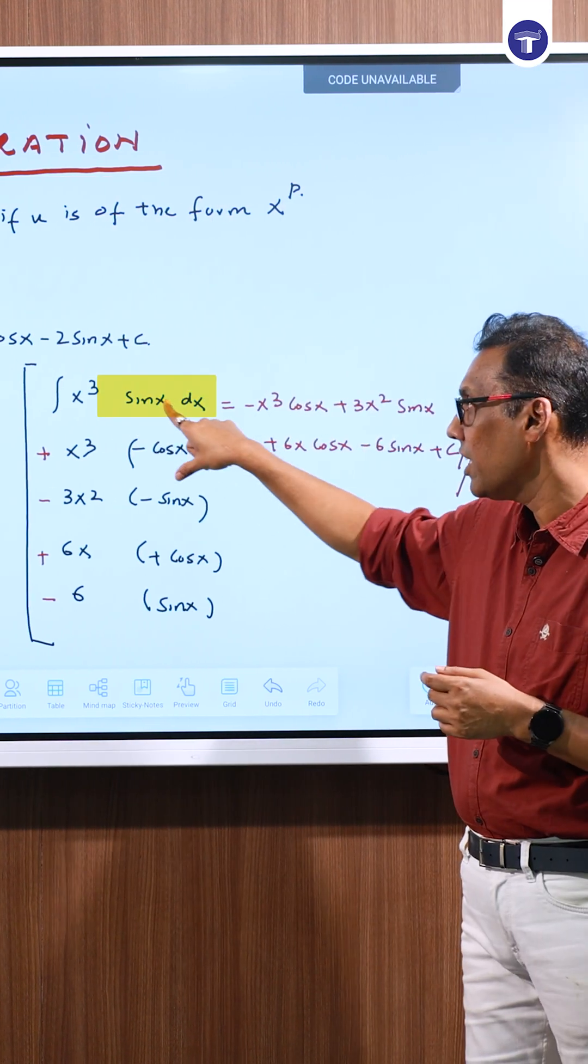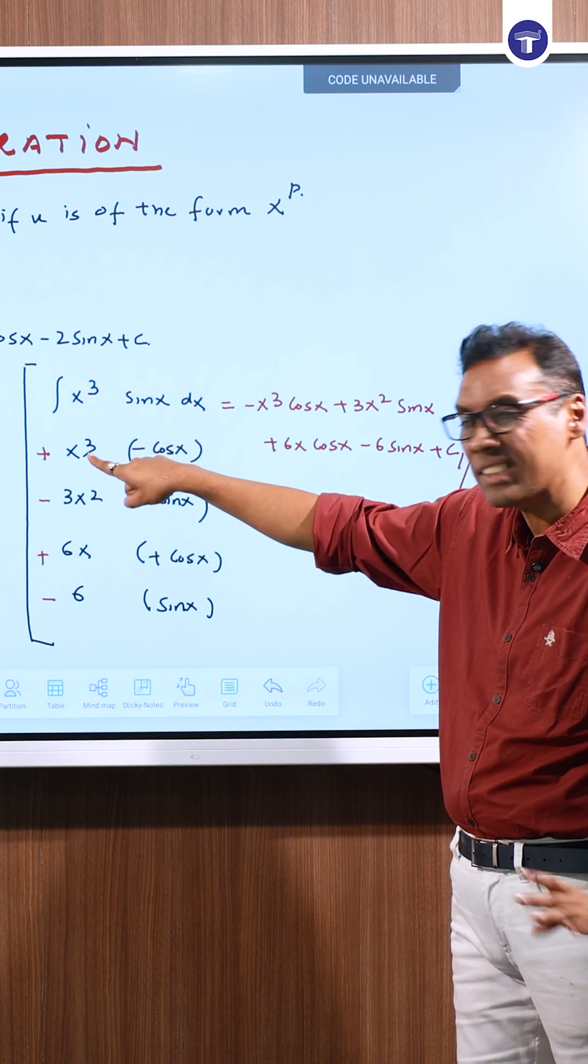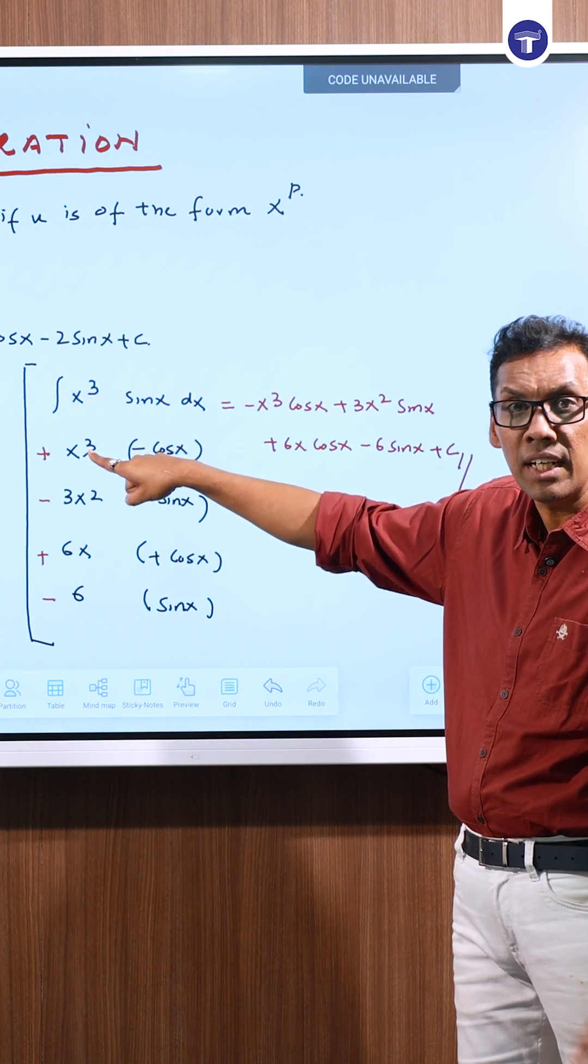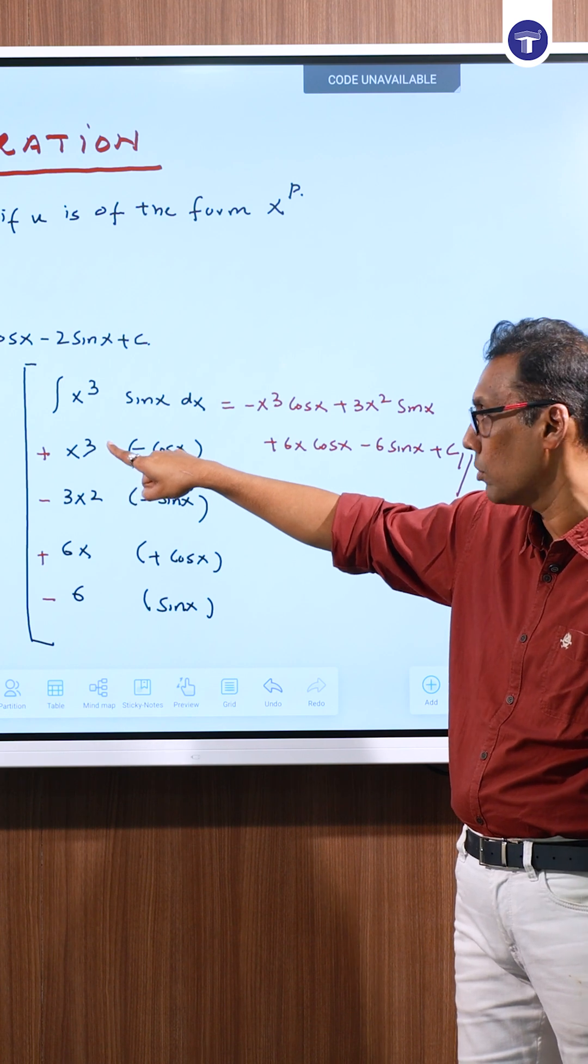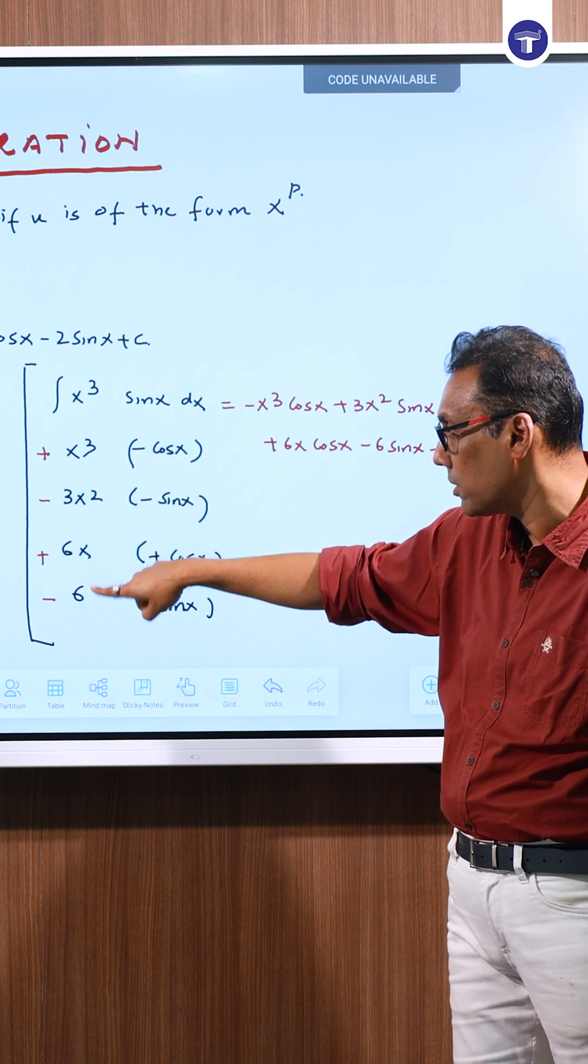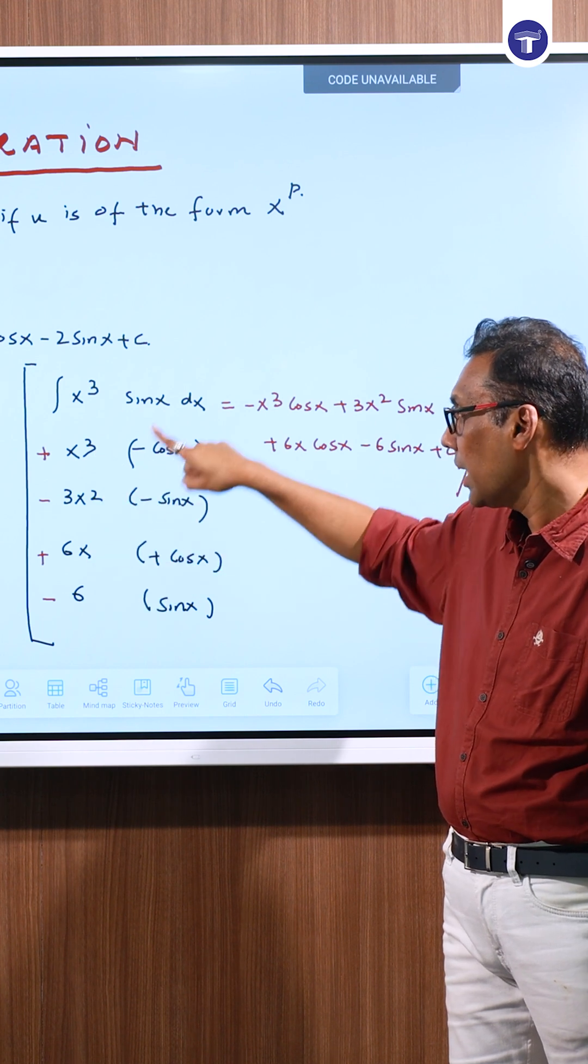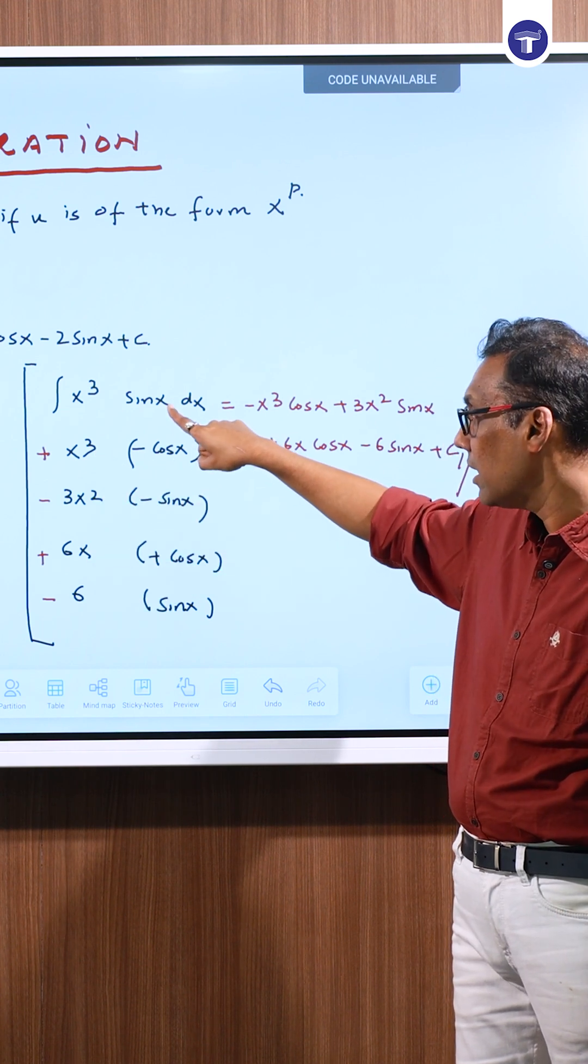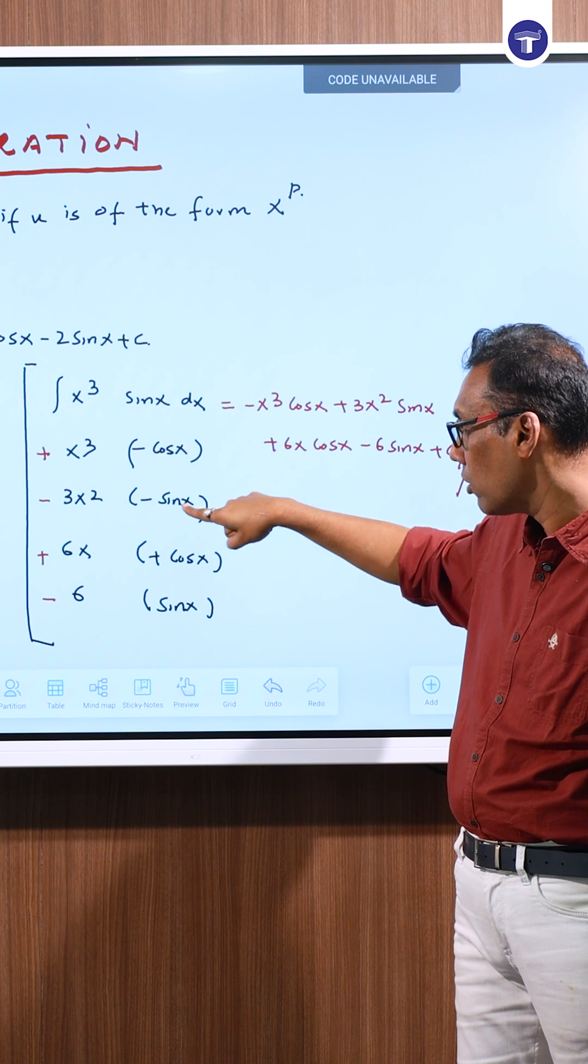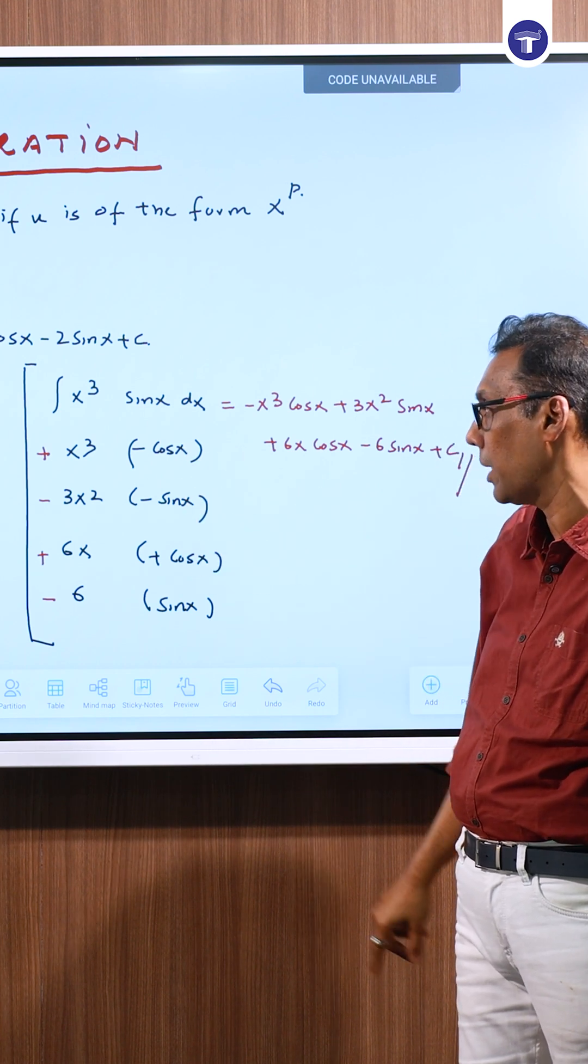For example, integration of x³ sin x. Remember, take the first term and keep taking derivatives until the derivative goes to zero. x³ derivative is 3x², then 6x, then 6. For integration: integral of sin is -cos, integral of cos is sin, integral of sin is -cos, and integral of cos is sin.